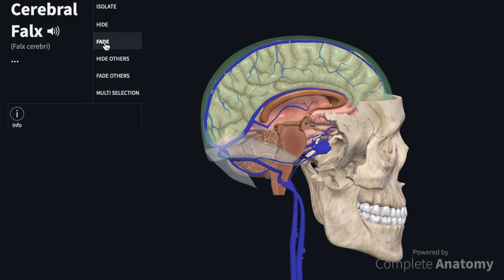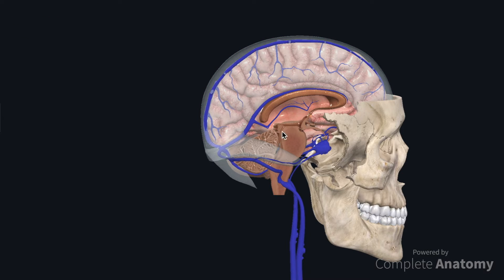These are regions where CSF is transported back into the venous system. The inferior sagittal sinus is located within the free edge of the falx cerebri and we can see that here. It runs from the anterior portion posteriorly to where it is met by the great cerebral vein, and where these unite they form the straight sinus which runs at the attachment between the falx cerebri and the tentorium cerebelli.